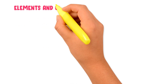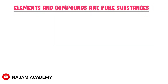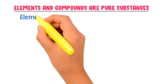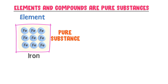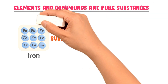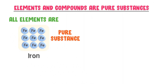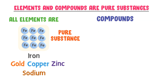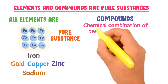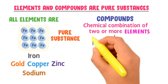All elements and compounds are called pure substances. An element like iron is a pure substance because all its atoms are the same throughout — they have the same properties and the same sizes. Therefore, all elements are pure substances, such as gold, copper, zinc, and sodium.